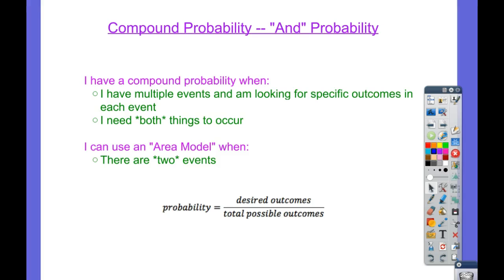Today we're going to look at compound probability. Sometimes I call it 'and' probability because it's specifically referring to one thing and another happened. I have a compound probability when I have multiple events and I'm looking for specific outcomes in each event.